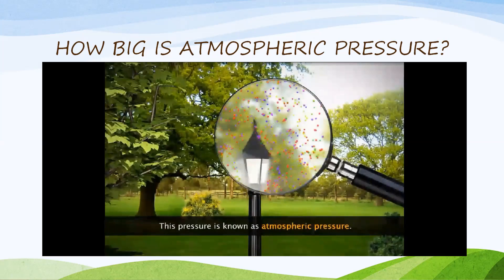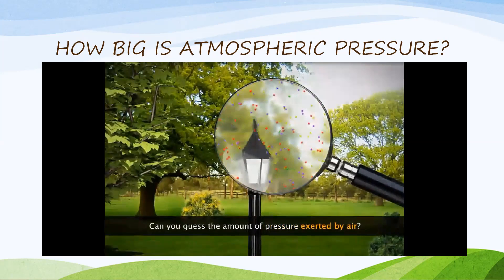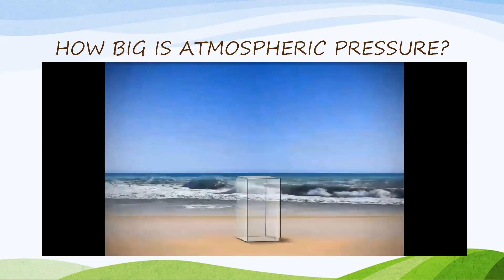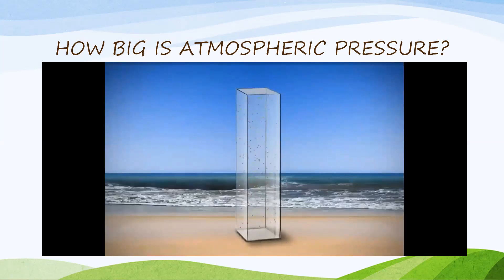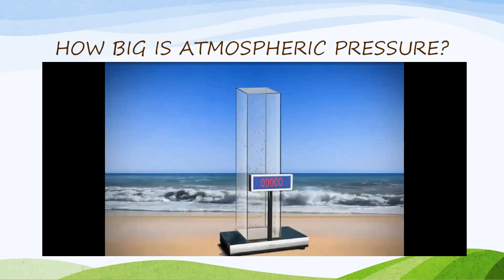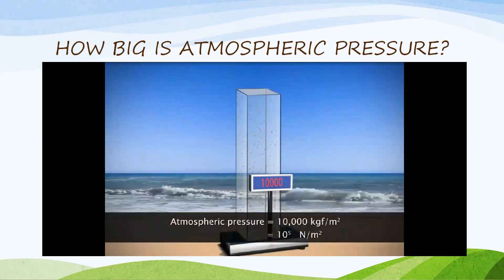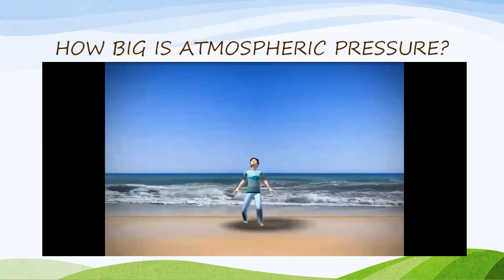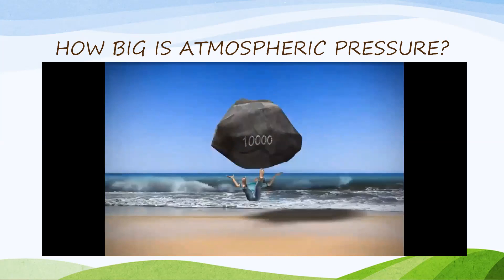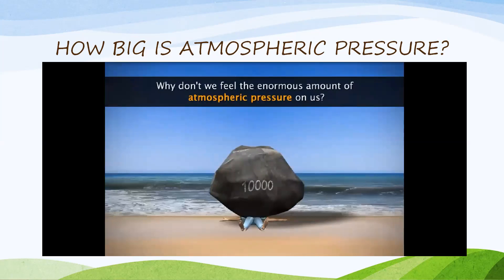To measure how big atmospheric pressure is, let's measure atmospheric pressure at sea level. When you take an air column above sea level and measure the pressure exerted by this air column, it is found to be as big as 10 raised to 5 Newton per meter square. You know how big that is? It is as if a big stone of 10,000 kg is falling on your body. But you never feel this atmospheric pressure at all, even though it is so huge.